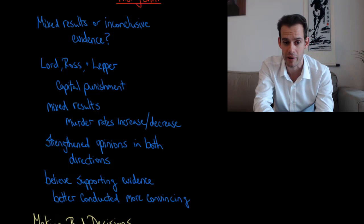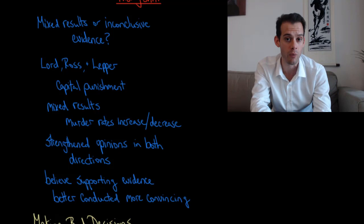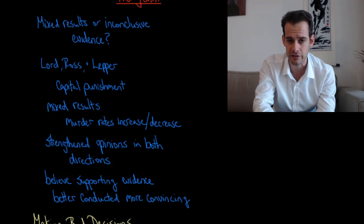Some of the evidence supported capital punishment and some of the evidence went against capital punishment. So it showed things like murder rates increasing or decreasing in different states depending on whether they adopted or banned capital punishment.